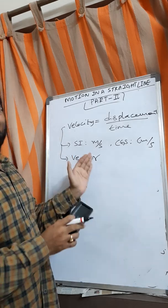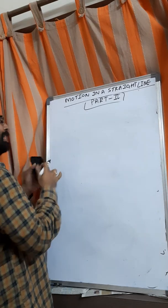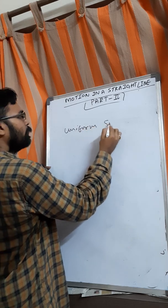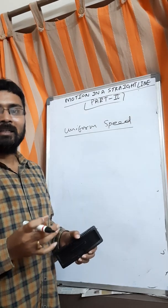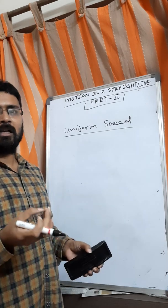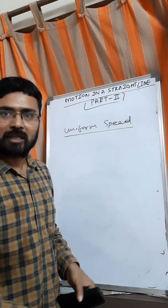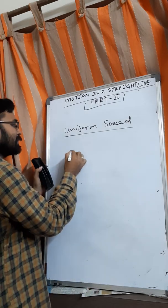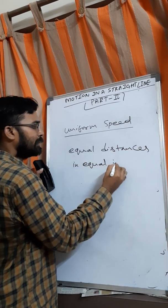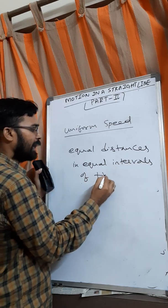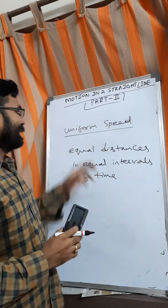So we discussed speed and velocity. Now we are going to discuss uniform speed and uniform velocity. Uniform speed — we can also call it constant speed — means the body is travelling the same distance every particular time interval. For example, in 2 seconds it travels 4 meters, in the next 2 seconds also 4 meters, and in the next 2 seconds also 4 meters. That means the body is travelling equal distances in equal intervals of time. Then we call it uniform speed or constant speed.